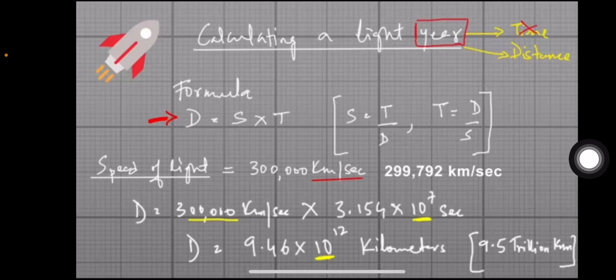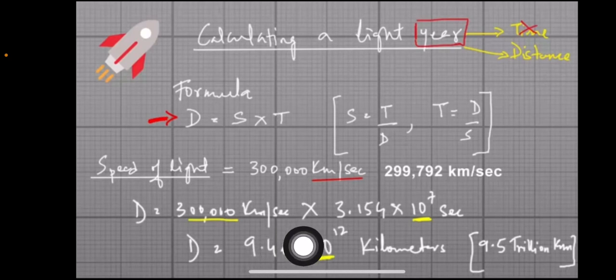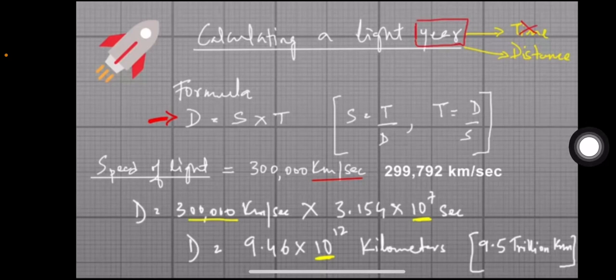That gives us 9.46 × 10^12 kilometers. Rounding off, one light year is approximately 9.5 trillion kilometers.